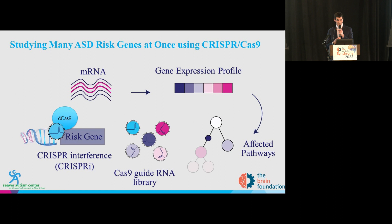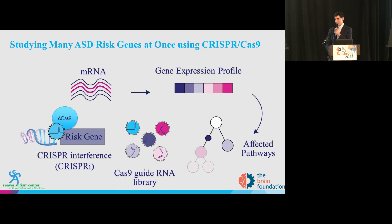We know a lot about human neurodevelopment in general. A goal of this project is to see which of the autism risk genes may be converging onto certain cellular and molecular pathways. Some of the pathways occurring during this period include neurogenesis — where neurons are born, they proliferate, they migrate out to all areas of the brain. When they get to their destination, they extend long and elaborately branched projections.